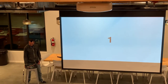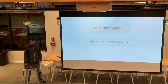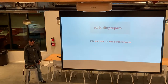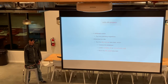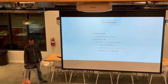Number one: Rails DB prepare, added in PR 35768 by Roberto Miranda. Basically, if the database exists, it runs any pending migrations.